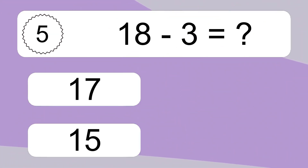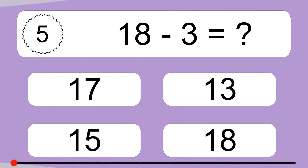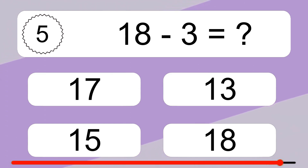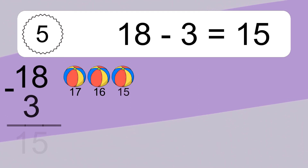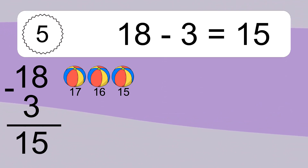18 minus 3 equals what? 18 minus 3 equals 15. Let's count it: 17, 16, 15.